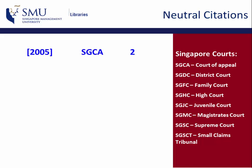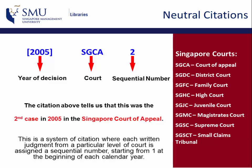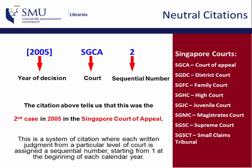There are some cases that are released for public viewing but not published in Singapore Law Reports. Their citations look a bit different — we call them neutral citations. The citation consists of the year of decision, the name of the court, followed by a sequential or running number. The citation tells us that this was the second case in 2005 in the Singapore Court of Appeal. Abbreviations of Singapore courts usually start with SG, such as SGCA for Singapore Court of Appeal, SGHC for Singapore High Court, and so on.